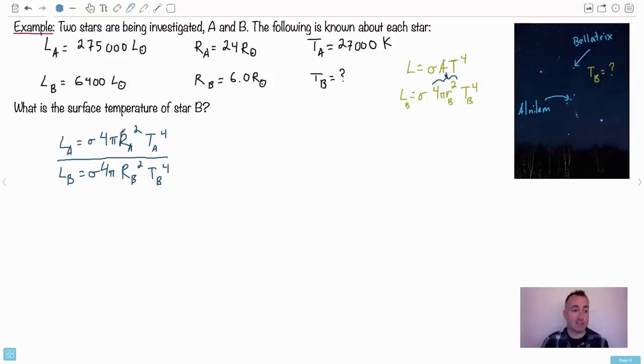And what you can do, you can divide a whole equation by another whole equation. Here for B, everything would just have a subscript B for it. Now I just start seeing if anything is simpler. The sigmas cancel out. The 4s cancel out. The pis cancel out. Now let's zoom into this LA. It's actually 275,000 L sun over LB, which is 6400 L sun. And all that will equal RA, which is 24 times R sun over RB, which is 6 R sun. It's really important. If you're going to take this whole thing, you have to remember to square it here. Then we have TA, which is 27,000 to the fourth divided by TB, which is what we want to the power of four.